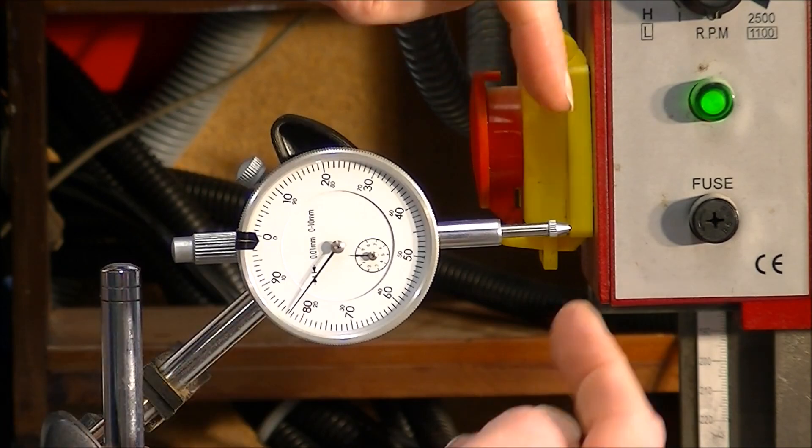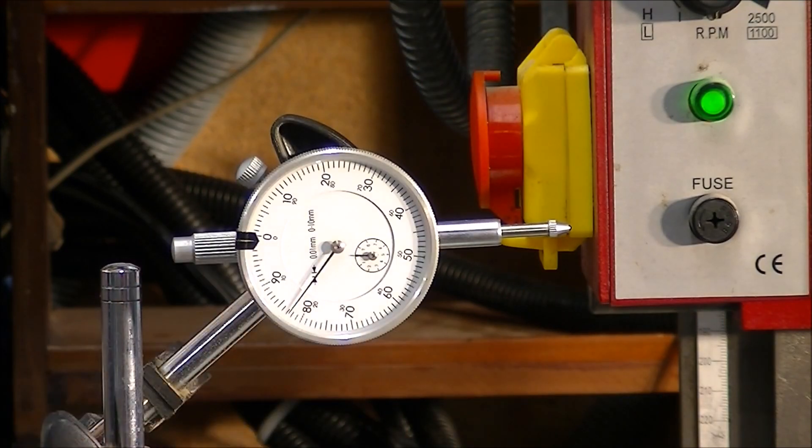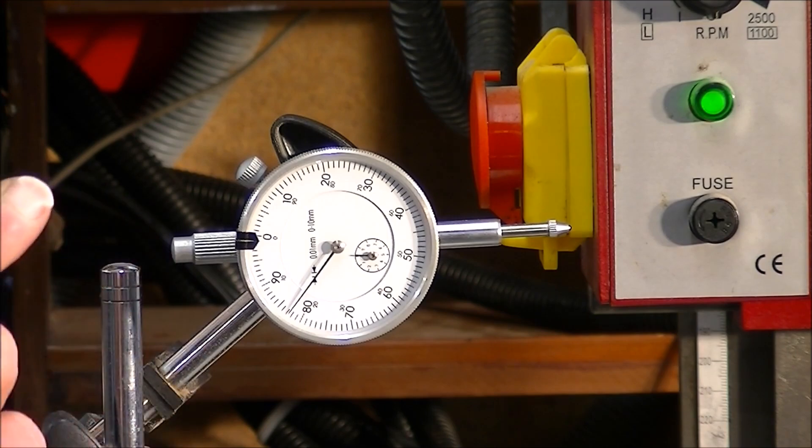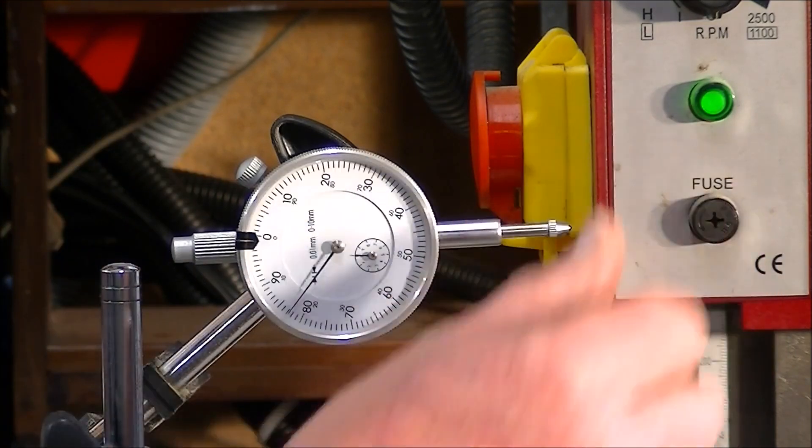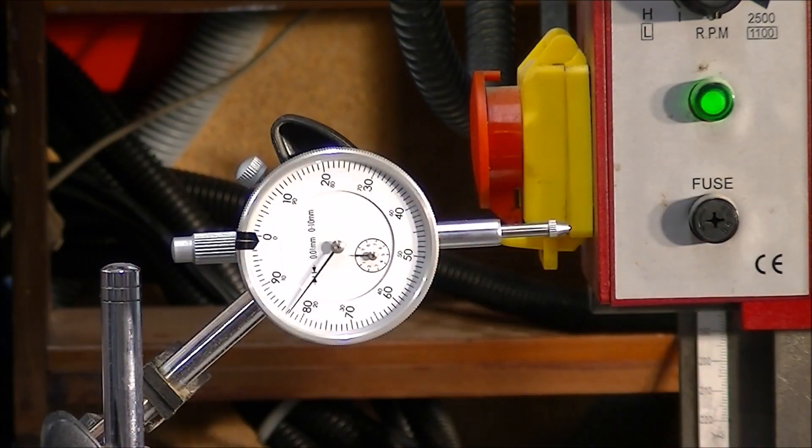What I'm going to do now is jog this DTI gauge - dial test indicating gauge - over to just the edge of here so I've got a surface to register off.